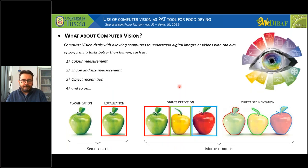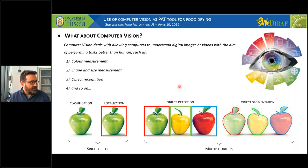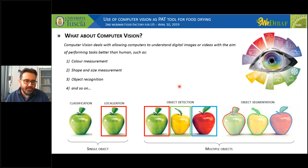Computer vision deals with allowing computers to understand digital images and video, performing tasks better than humans in color measurement, shape and size measurement, and object recognition. This technology can be applied to a single object to classify and perform localization in a picture or video, or to act on multiple objects to perform object detection or object segmentation.